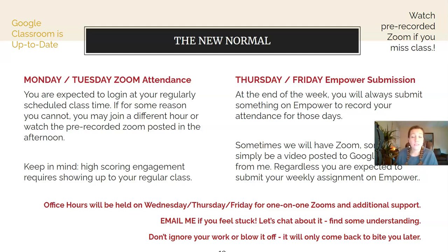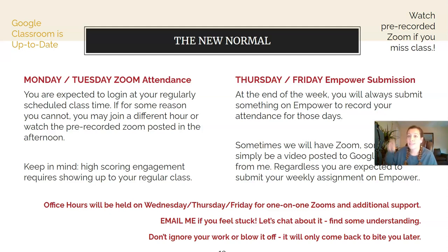If you missed the Zoom session on a Monday or Tuesday morning, you can watch a pre-recorded session in the afternoon at a time that works for you. I'm not going to run double classes all day — that's just too much. But I will record every Zoom from this day forward. That folder has been shared to Google Classroom — it says Zoom Recordings. You find the date that you missed and open it up. I do the same thing with all my IB classes, so you're still getting the same information.